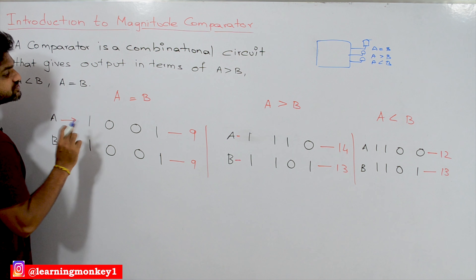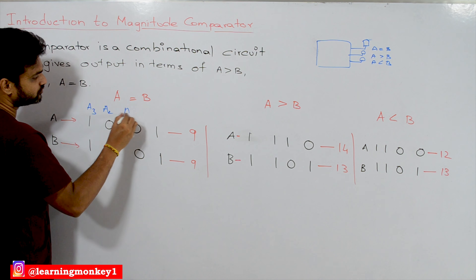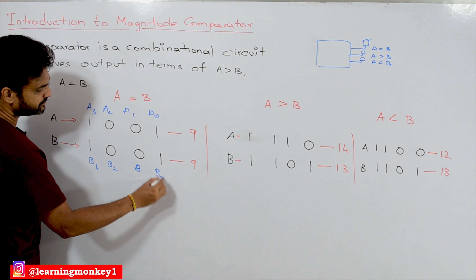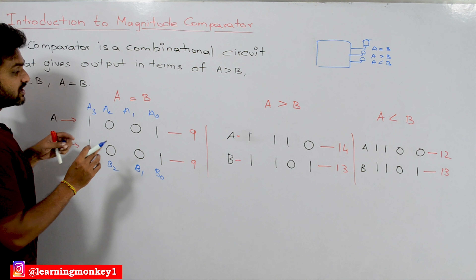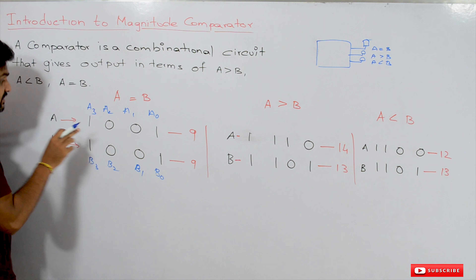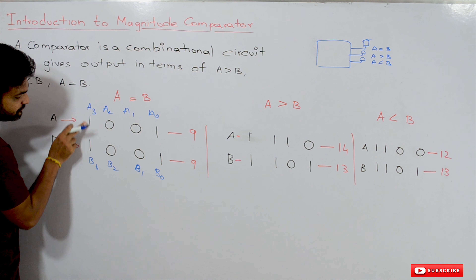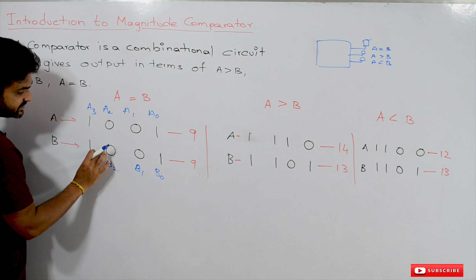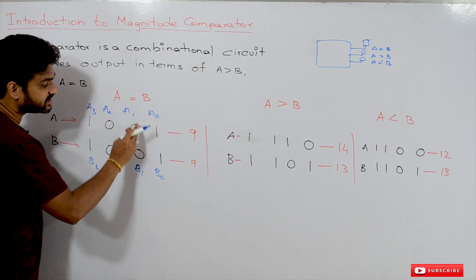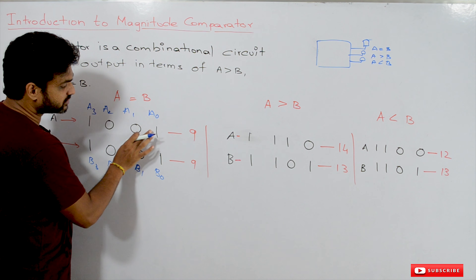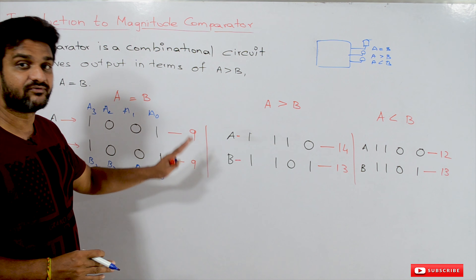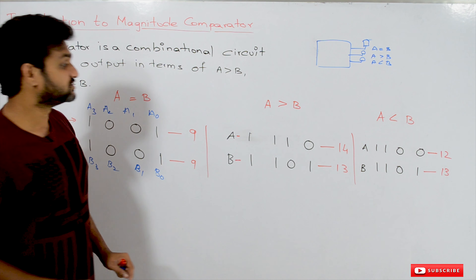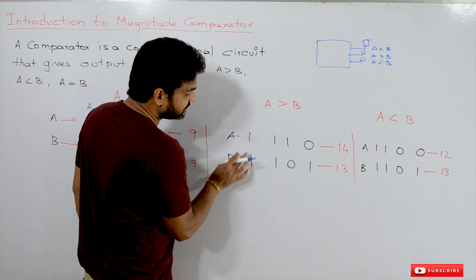So first what the circuit will do is start from the most significant bit. Here it is A3, A2, A1, A0 and similarly B3, B2, B1, B0. How the circuit for this comparison works: first compare the most significant bit — if both are equal, leave it and go to the next most significant bit. If all the bits are equal in this way, then we are going to say that A is equal to B.